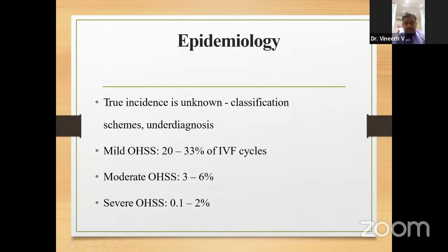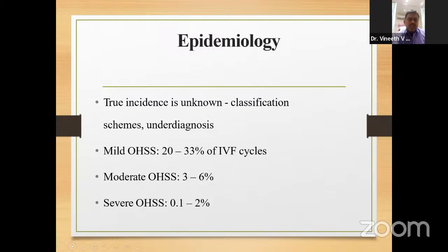Coming to epidemiology, the incidence is unknown. Under classification schemes: mild OHSS affects nearly one third of IVF cycles and 20 to 33% of stimulated cycles; moderate OHSS occurs in 3 to 6%; and severe OHSS occurs in only 0.1 to 2%. From these statistics, we can understand that severe OHSS is very rare while mild OHSS is very common.